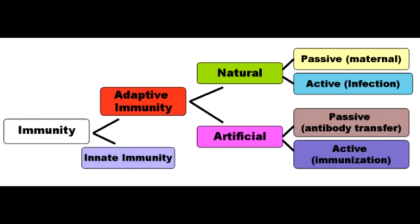Active immunity is what happens when you're exposed to a foreign antigen for the first time. B and T cells are activated and they form memory B and T cells. These memory cells remember each specific pathogen encountered and will mount a strong response if that pathogen is ever detected again.